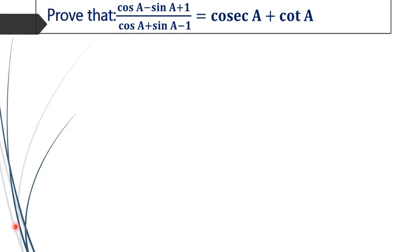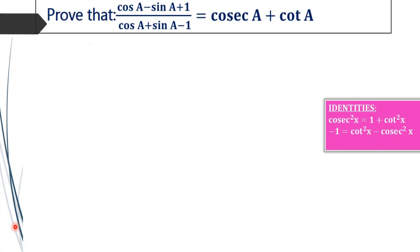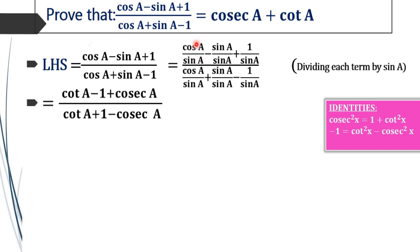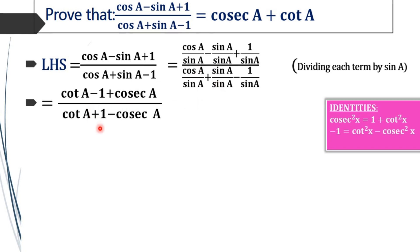For proving this, we will take the LHS of this equation and divide each and every term of the LHS by sin A. We are dividing by sin A because cos A divided by sin A gives cot A, and 1 divided by sin A gives cosec A. So, dividing each term by sin A converts the LHS completely in terms of cosec A and cot A.